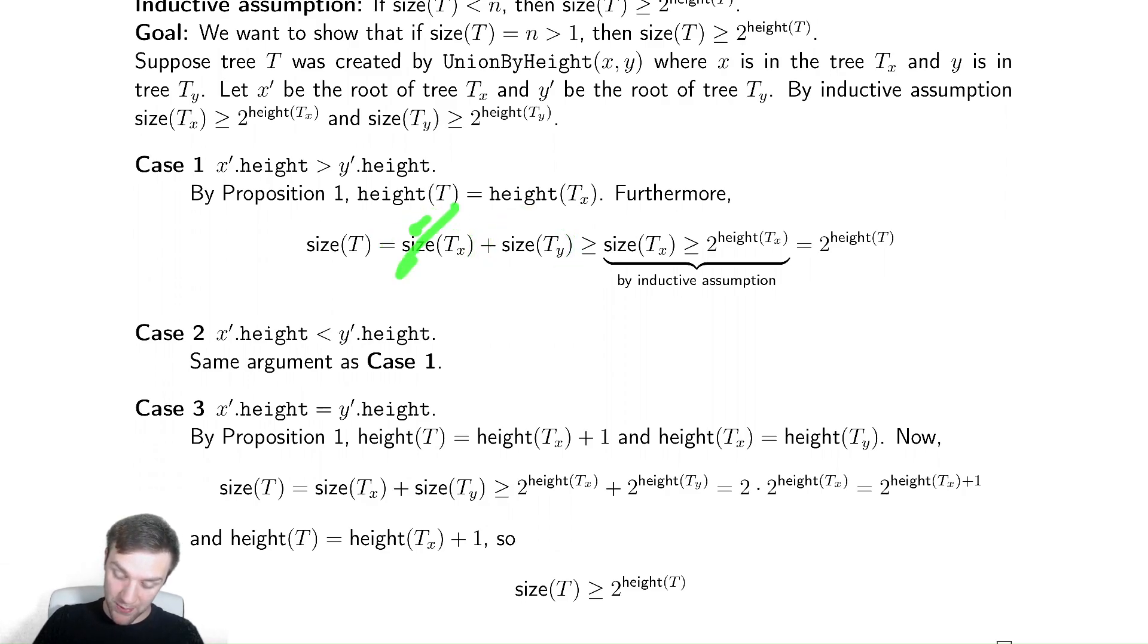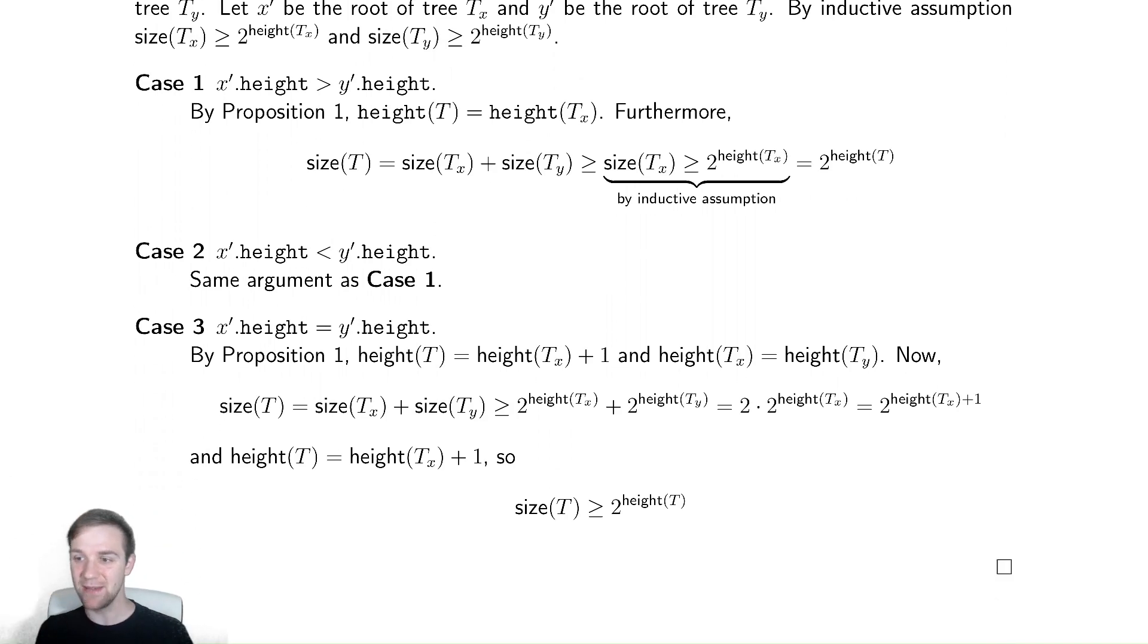We know by the previous proposition we can say that the height of t is equal to the height of tx. And then we're just going to play around with stuff. The size of t is by definition the size of the two trees added together, and we're just going to drop the size of ty entirely. And then we can use our inductive assumption on the size of tx, which is greater than or equal to 2 to the height of tx. And I already know the height of tx is the height of t, which is what we defined h to be. So this all checks out.